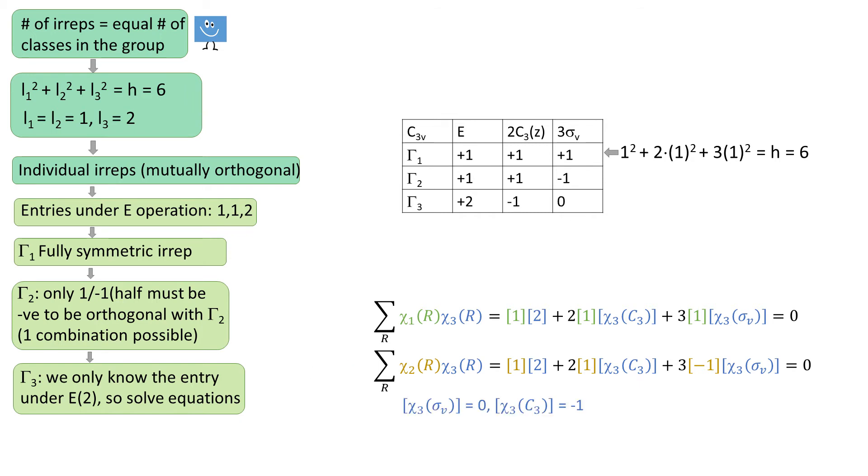That means tau3 has minus 1 under rotations and 0 under reflections. And if we take a dot product of tau3 with itself, it does give 6, so all good. The last step is to double check the orthogonality and the length of the vectors and we are done.